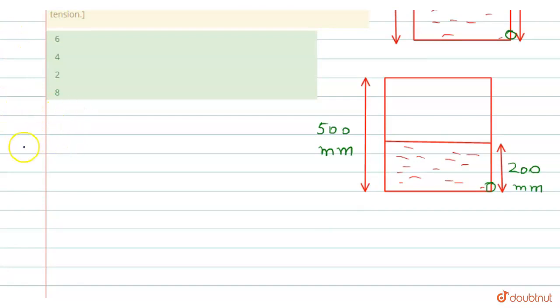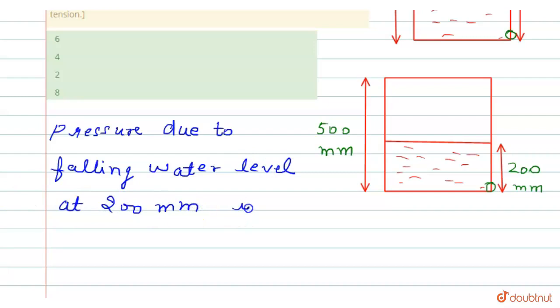find the pressure due to falling water level at 200 mm as P + ρgh = P₀.